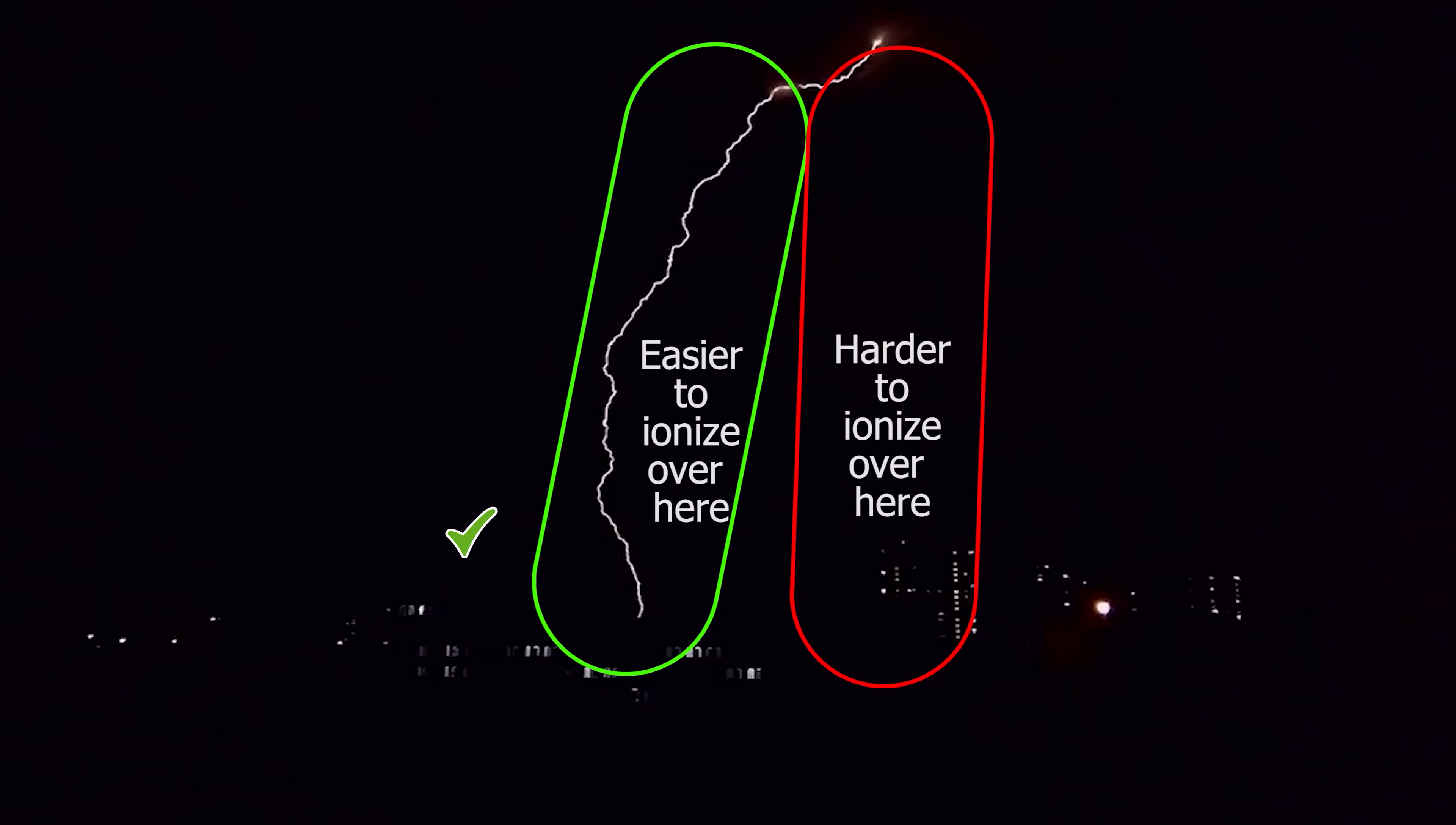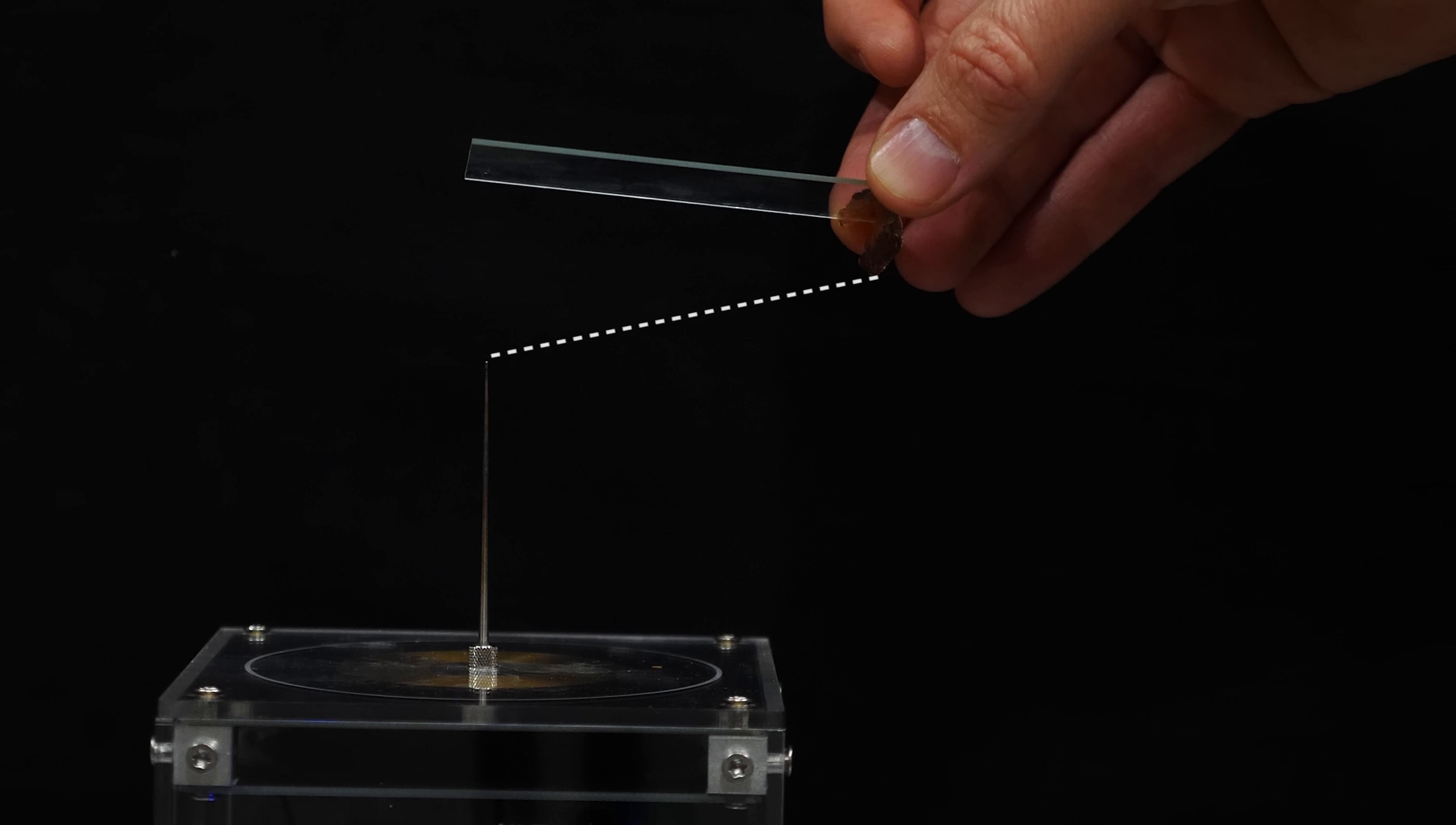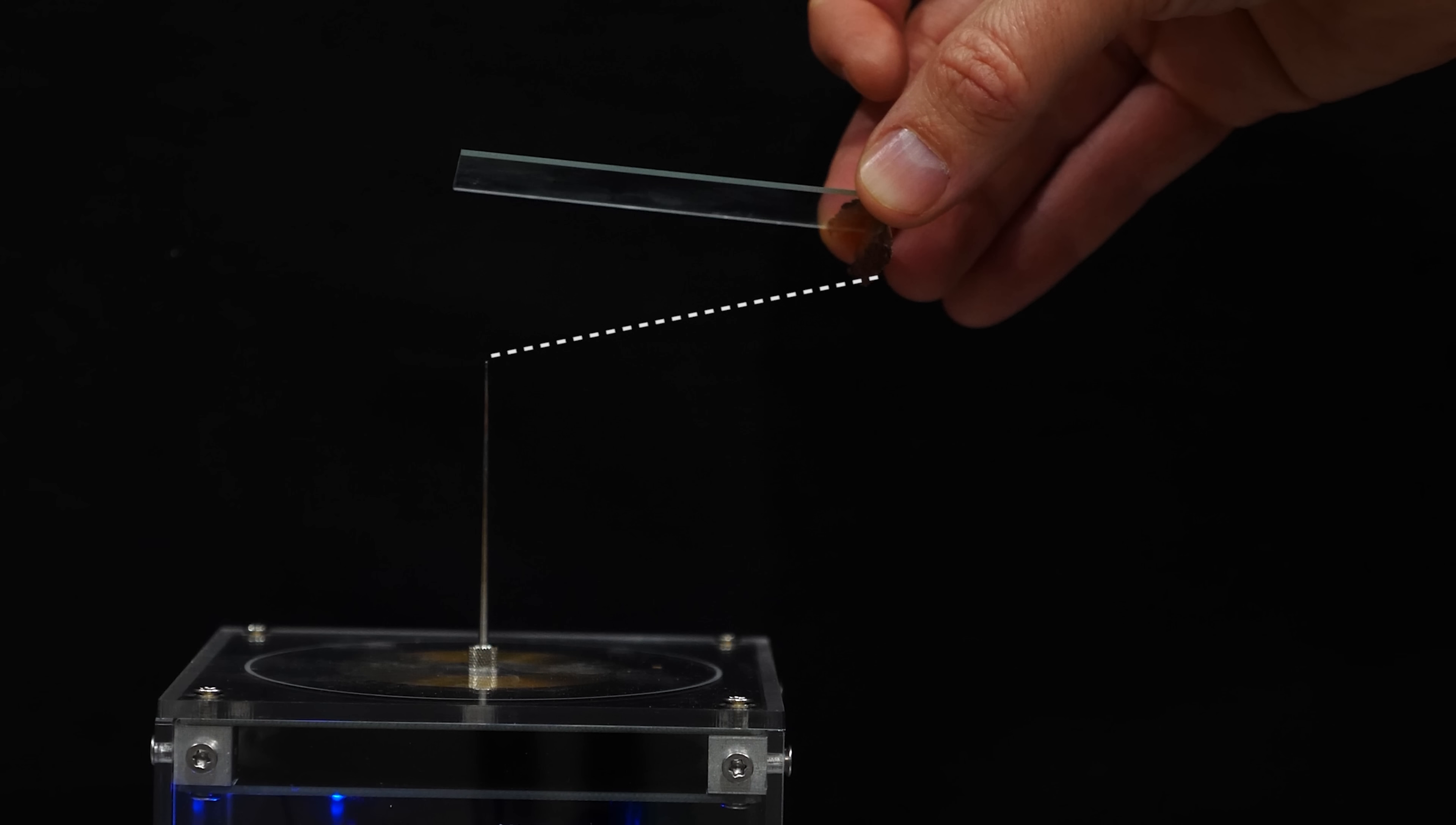For example, along the surface of glass is easier to ionize than through straight air. So this spark will take the longer path next to the glass slide to shock me, rather than a shorter straight path through the air.